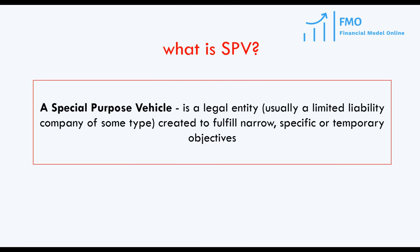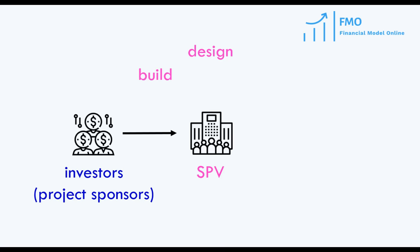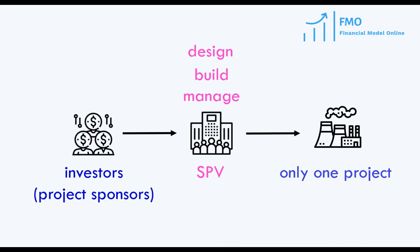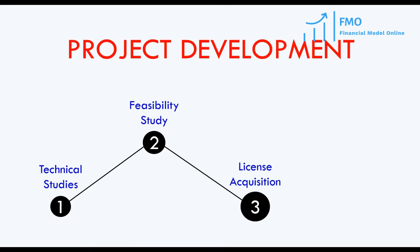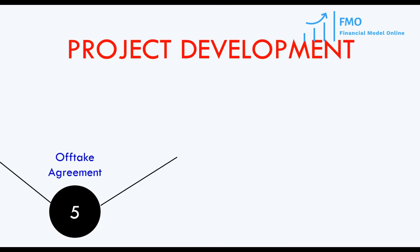So, what are the steps involved in project finance? First, an investor — also called a project sponsor — sets up a special-purpose vehicle with the sole purpose of designing, building, and managing a specific project. Then, the project sponsors develop the project. They carry out necessary technical and economic studies, obtain necessary permits, and acquire the land where the project will be built. Next, they conclude the necessary contracts, such as off-take agreements and construction contracts.